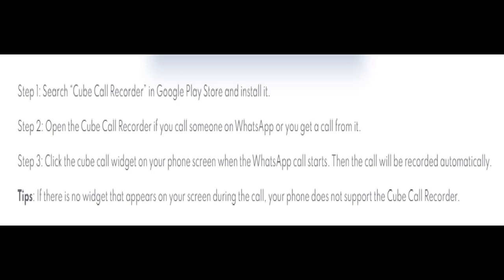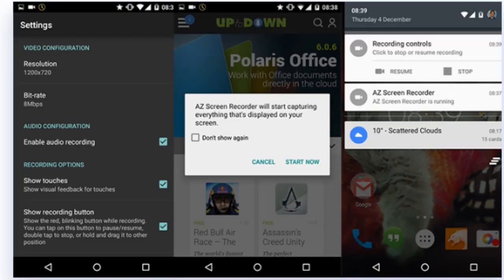Step 1: Search Cube Call Recorder in the Google Play Store and install it. Step 2: Open the Cube Call Recorder when you call someone on WhatsApp or receive a call. Step 3: Click the Cube Call widget on your phone screen when the WhatsApp call starts. The call will then be recorded automatically.